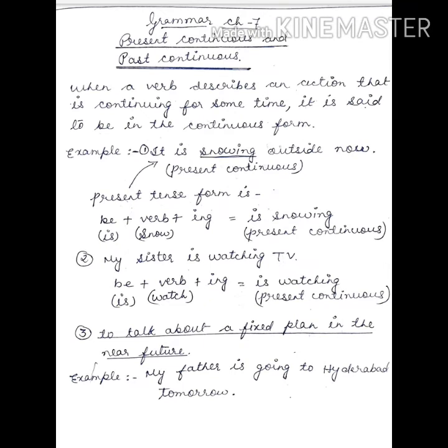Let's have a look. What is present continuous? When a verb describes an action that is continuing for some time, it is said to be in the continuous form. For example, 'it is snowing outside now' is present continuous.